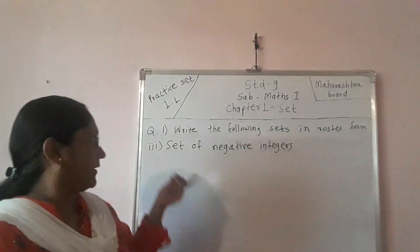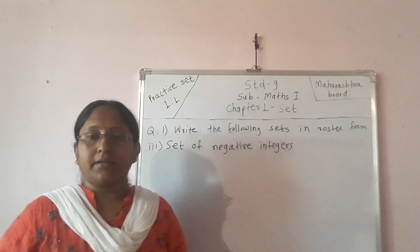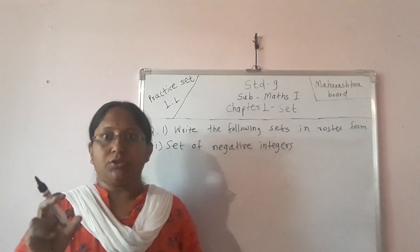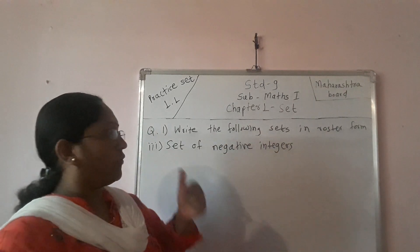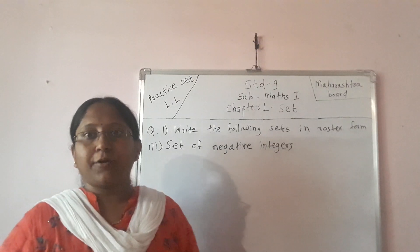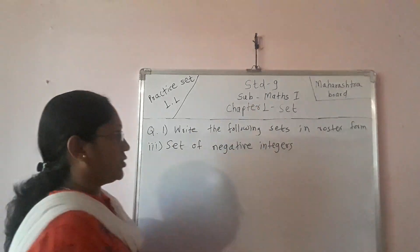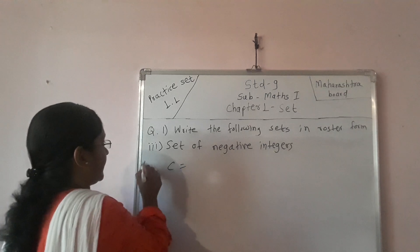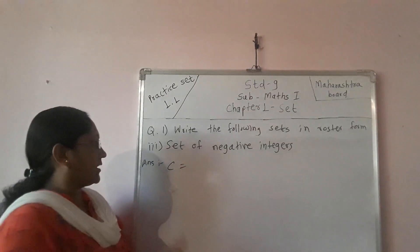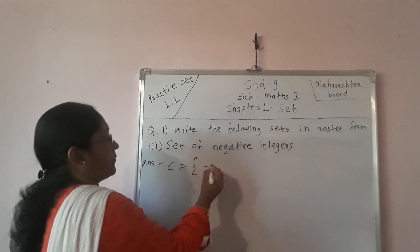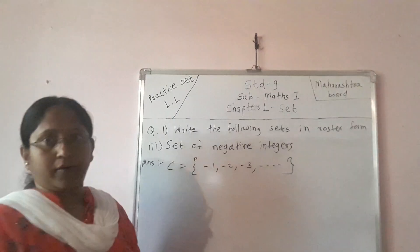Third sub-question: set of negative integers. We know integers include positive numbers, 0, and negative numbers. For the set of negative integers, negative numbers start from minus 1 to negative infinity. So I declare that set as C, which is equal to {-1, -2, -3, ...} and so on.